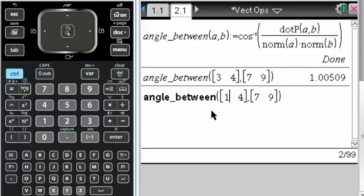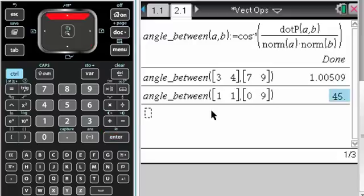What if I do 1, 1 and 0, 9. Let's see what I get there. 45, which is what I'd expect, because 1, 1 makes a 45 degree angle, and 0, 9 is on the positive y-axis. So it's giving us what we want.